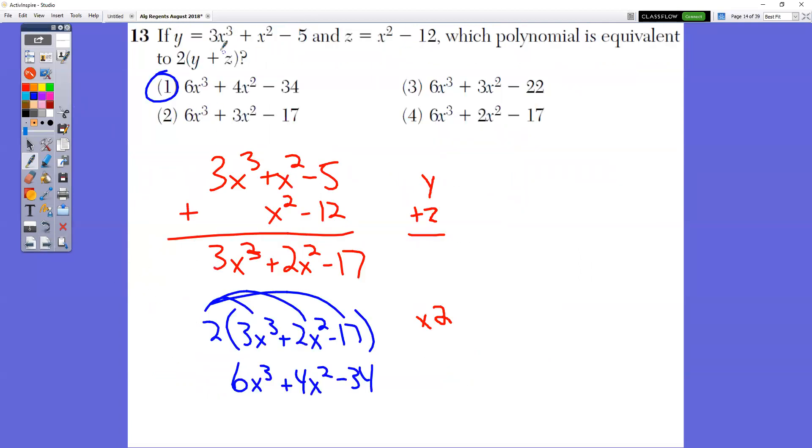In question number 13, if y equals this and z equals this, which polynomial is equivalent to two times y plus z? So the first thing that we want to do is this part. This is actually y plus z. All right. y plus z gives you 3x³ + 2x² - 17. And then you have to multiply the whole thing by two. So take and distribute, distribute, distribute. We end up with this answer, which is choice one.